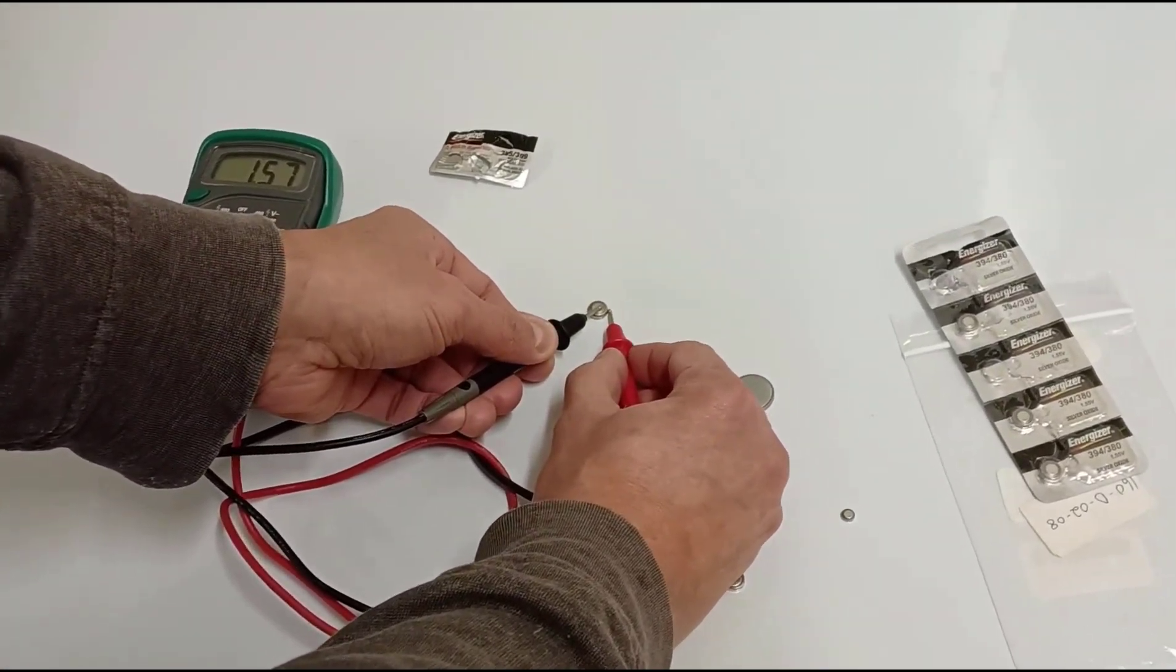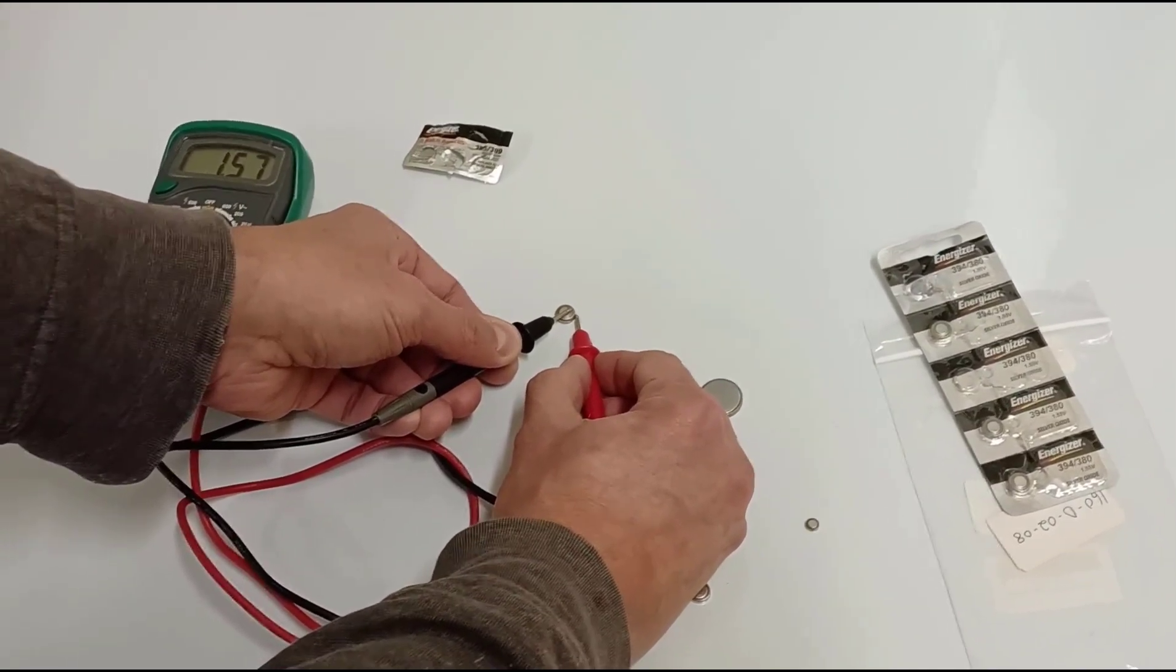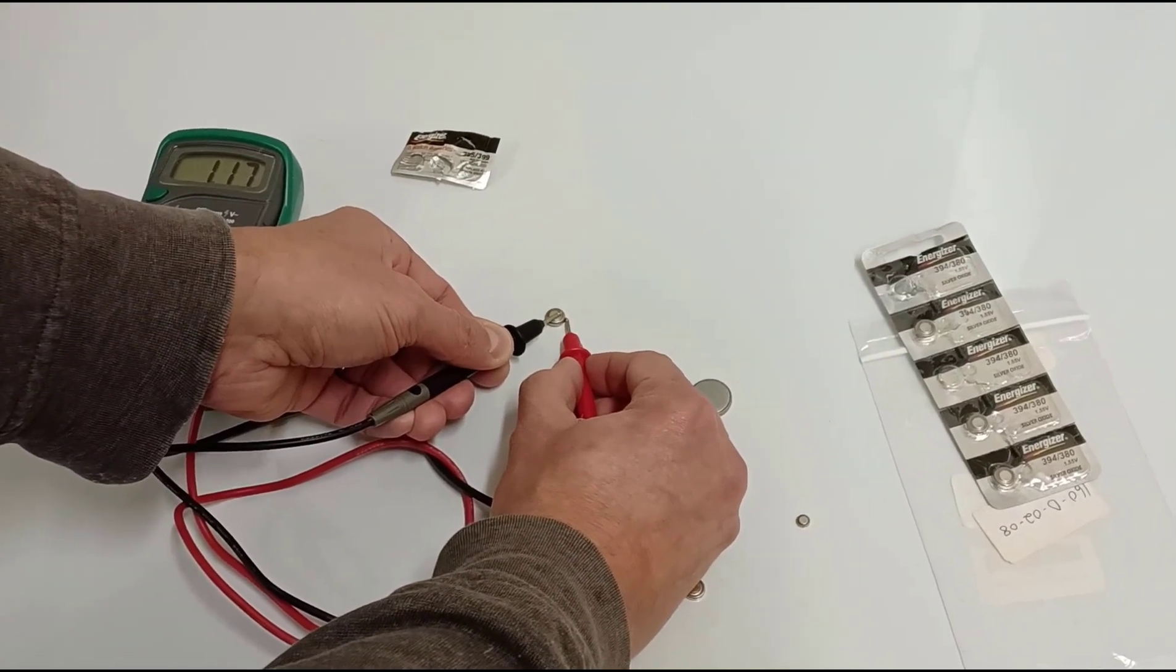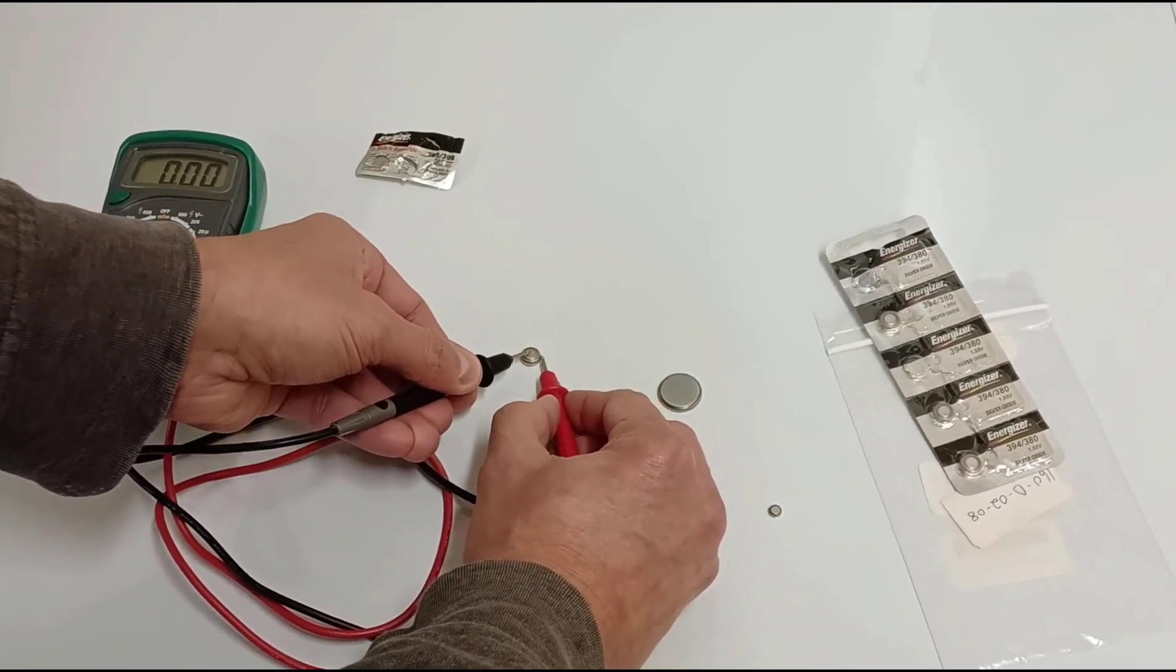1.57. See it. 1.56. It's because the thing's sliding, but it's 1.57. So this is a good battery too. It's all over the place because I've got to hold it on there.